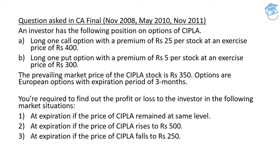The number one thing that you need to keep in mind is that he is entering into two positions simultaneously — not one by one, both positions simultaneously. At one point he is buying one call option, that is he wants to buy a buy option, with a premium of 25 rupees per stock at an exercise price of 400. The exercise price is 400 and for that he has to pay an option premium of 25 rupees per stock. At the same time he is also willing to buy a put option — he wants to buy a selling option — with a premium of 5 rupees per stock at an exercise price of 300. Now the current price is 350.